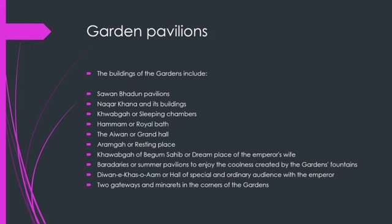Now we will talk about garden pavilions. The buildings of the gardens include Sawan Bhadon pavilions, Naqar Khana and its buildings, Hammam royal baths, the Iwan and grand hall, Rang Gah and resting places, and the emperor's wife's quarters.